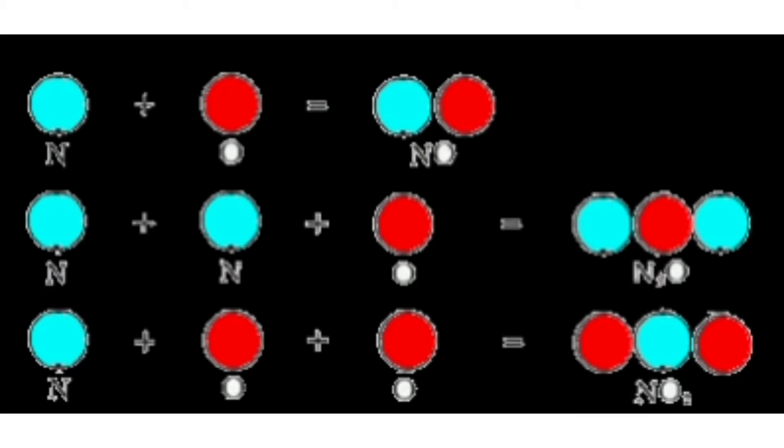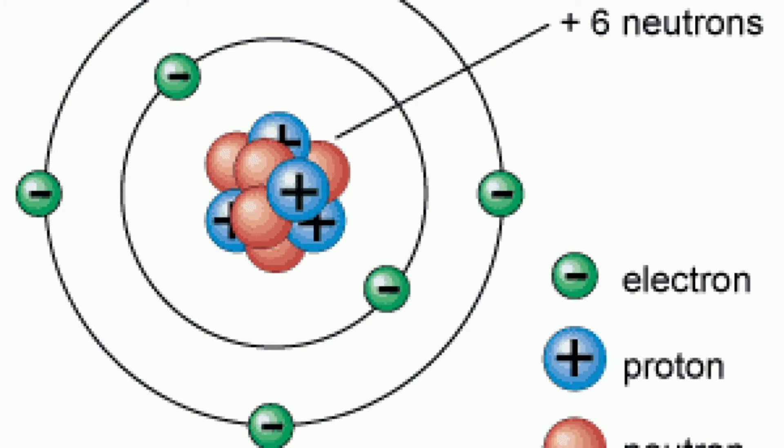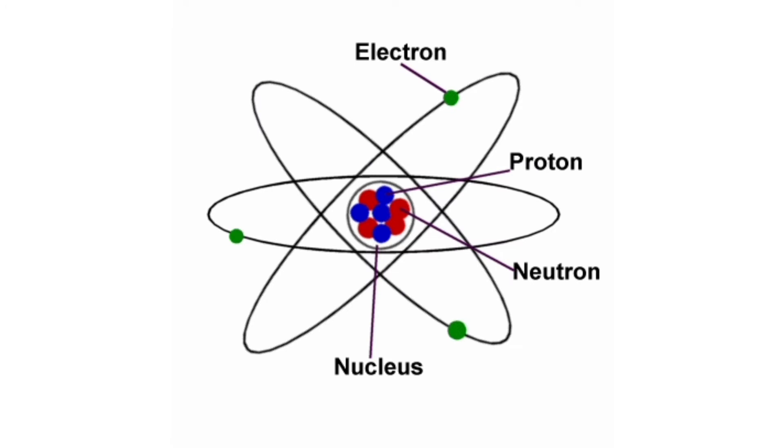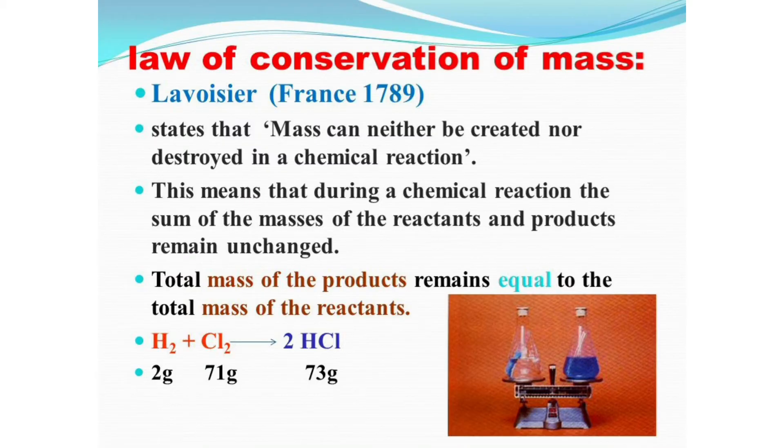Substances which combine together in a chemical reaction are known as reactants, whereas the new substances formed are the products. There is no change in mass during chemical reaction. If we see total mass of reactant and product includes solid, liquid and gases including air that are part of reaction, the law of conservation of mass will become clear from the following equation.